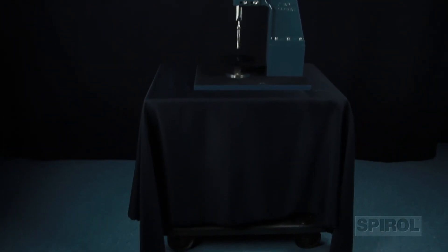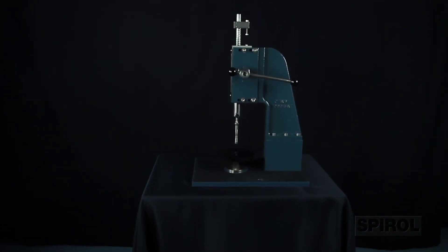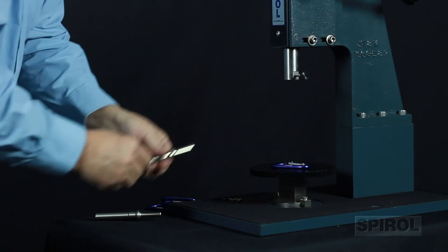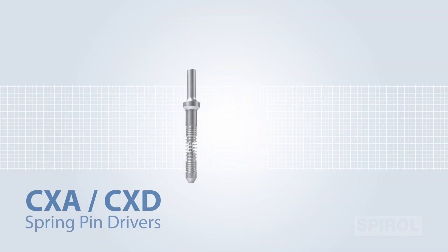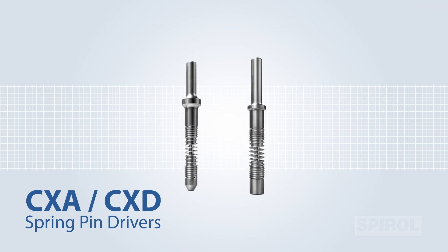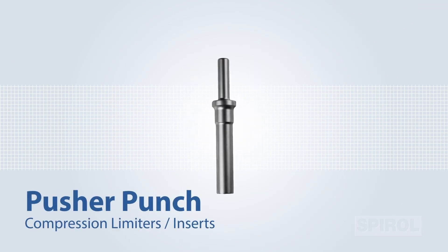This benchtop unit can easily be transported to any location. The PMH uses Spiral's standard installation tools: the CXA or CXD spring pin drivers or the pusher punch for compression limiters and inserts.